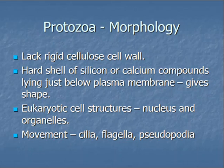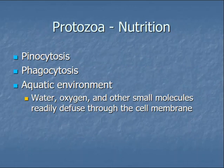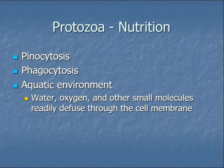Protozoa are eukaryotic cells, so they do have a nucleus and organelles. They move by cilia, flagella, or pseudopodia — pseudopodia being a movement of parts of the cell with the rest following. For nutrition, these bring in water by pinocytosis and food by phagocytosis. Pinocytosis brings in fluid, and phagocytosis brings in solid particles or food to the organism.